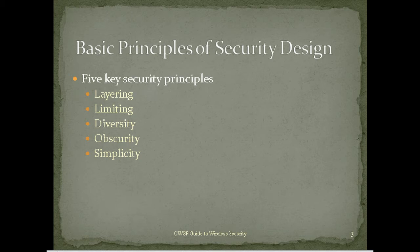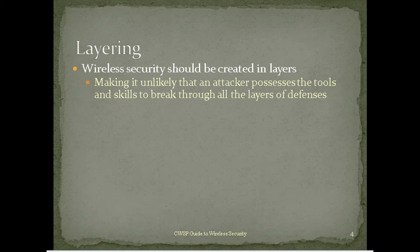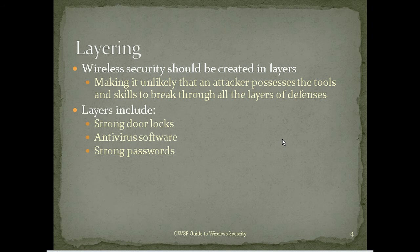Having different types of equipment means one technique won't work on everything. The issue is training — networkers need a broader knowledge base. In layering, security should be created in layers to make it unlikely that an attacker possesses the tools and skills to break through all of them. Layers can include physical security: a fence around the building, placement of access points to avoid broadcasting outside, shielding on windows with Faraday film, or even a Faraday cage around the building to prevent wireless signal from leaking out.